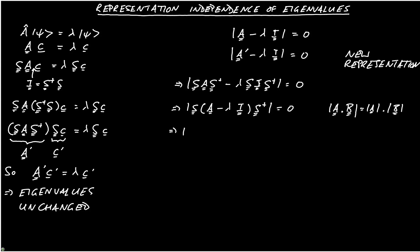So that then implies that we have the determinant of S, multiplying the determinant of A minus lambda I, multiplying the determinant of S dagger is equal to zero.